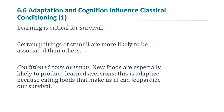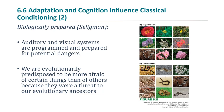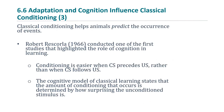Conditioned taste aversion and biological preparedness are both examples of adaptation affecting how conditioning works in animals including humans. Moving on to cognition and its effects: classical conditioning helps animals predict the occurrence of events.